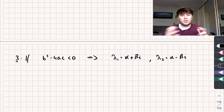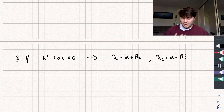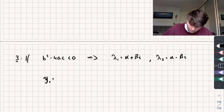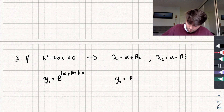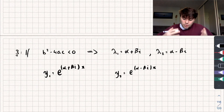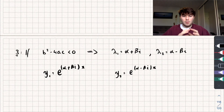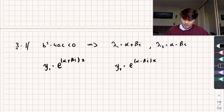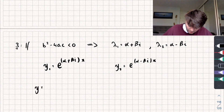The third case — where the discriminant is less than zero — gives complex conjugate roots: λ₁ = α + βi and λ₂ = α − βi. This gives solutions y₁ = e^((α+βi)x) and y₂ = e^((α−βi)x). When dealing with differential equations, we usually want real-valued solutions, so we want to eliminate the imaginary numbers. We write the general solution as c₁e^((α+βi)x) + c₂e^((α−βi)x).